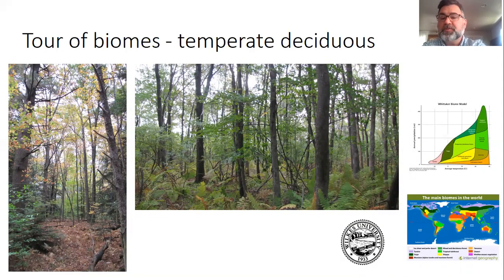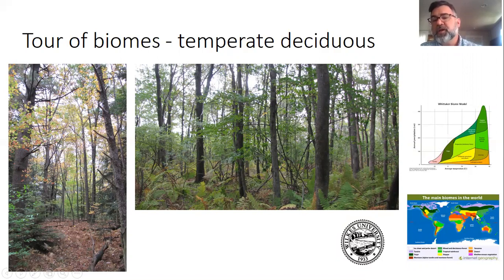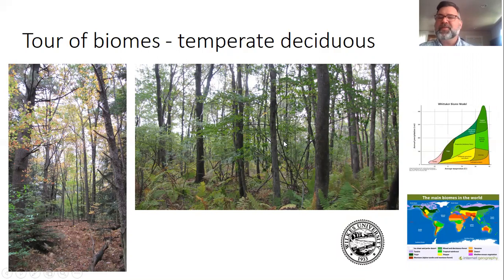Deciduous forest — if you want to see it and you're at Wilkes, just go outside. Temperate deciduous forest: temperate refers to the temperature variation — warm to hot summers and cold winters. This makes up a big chunk of Eastern North America and Eastern Asia as well. Big chunks of China structurally look just like this, and in Japan you have deciduous forests with Oak-Maple forests that look amazingly similar to Pennsylvania, except with related but different species.